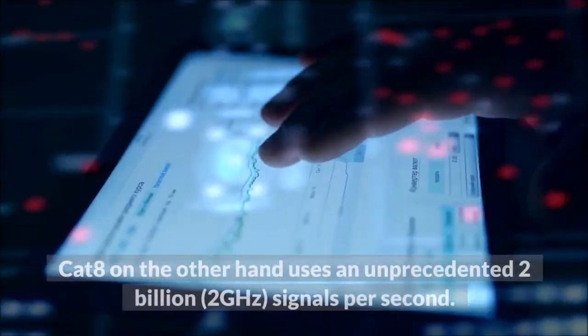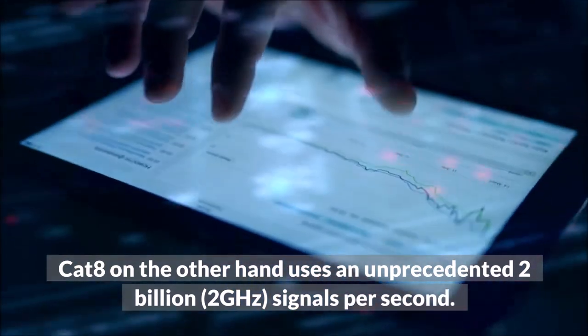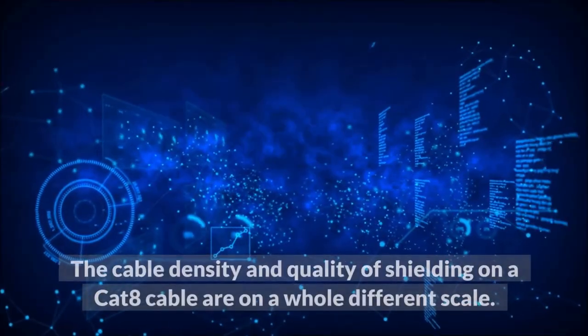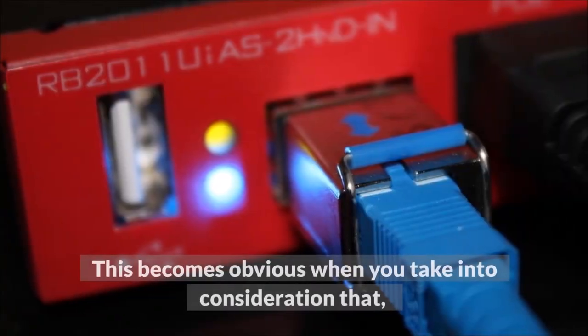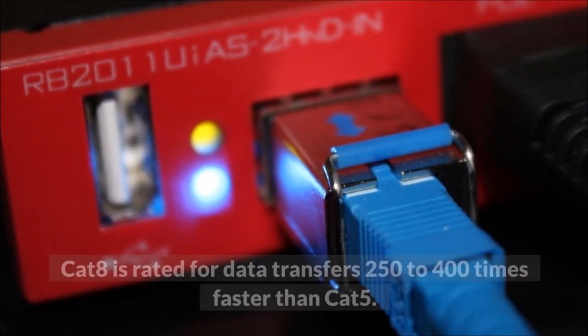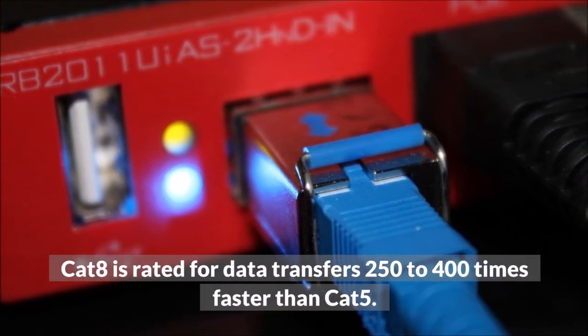CAT-8 on the other hand uses an unprecedented 2 billion, 2 GHz, signals per second. The cable density and quality of shielding on a CAT-8 cable are on a whole different scale. This becomes obvious when you take into consideration that CAT-8 is rated for data transfers 250 to 400 times faster than CAT-5.